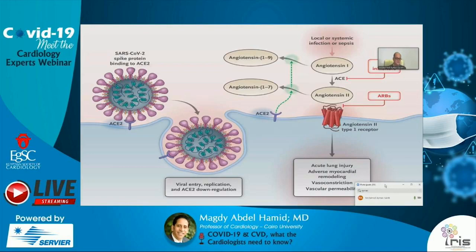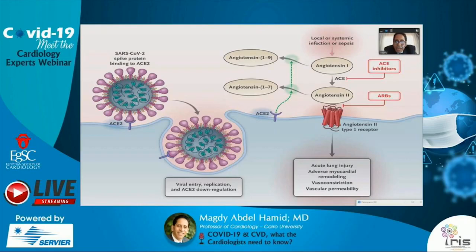The spike protein of SARS-CoV-2 binds to the ACE2 receptor, leading to entry of the virus, internalization, endocytosis, replication, and consequently downregulation of ACE2. With downregulation of ACE2, there is no more conversion of angiotensin-2 to angiotensin-1-7 — which has a vasodilator effect — so angiotensin-2 increases, inducing acute lung injury, adverse myocardial remodeling, vasoconstriction, and increased vascular permeability, ultimately leading to ARDS.